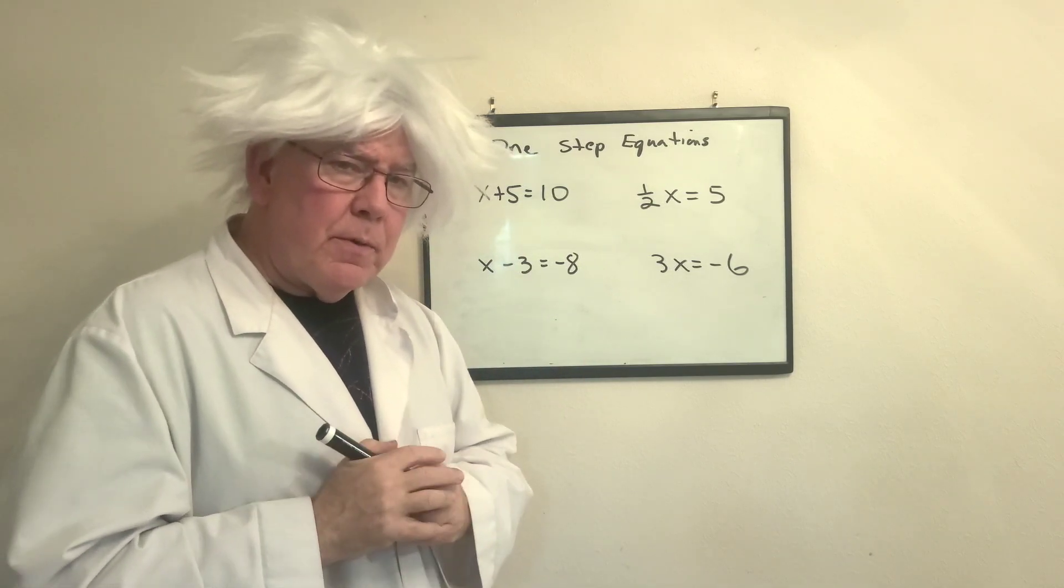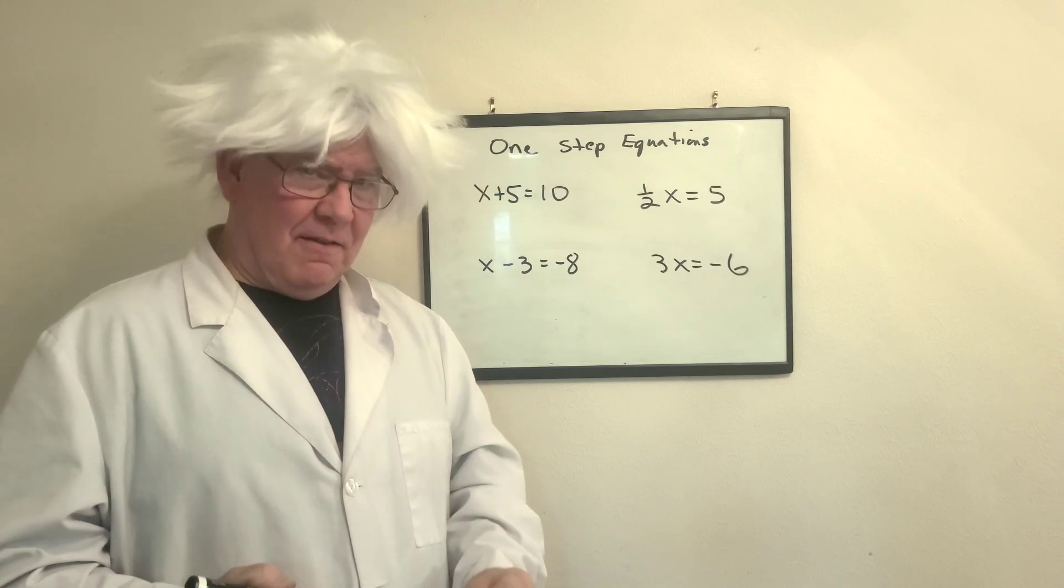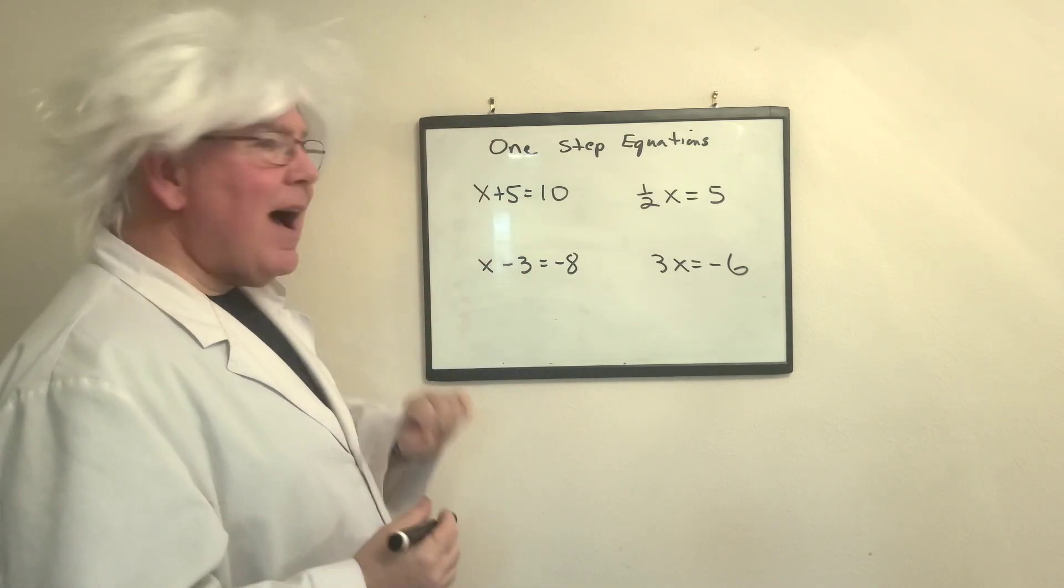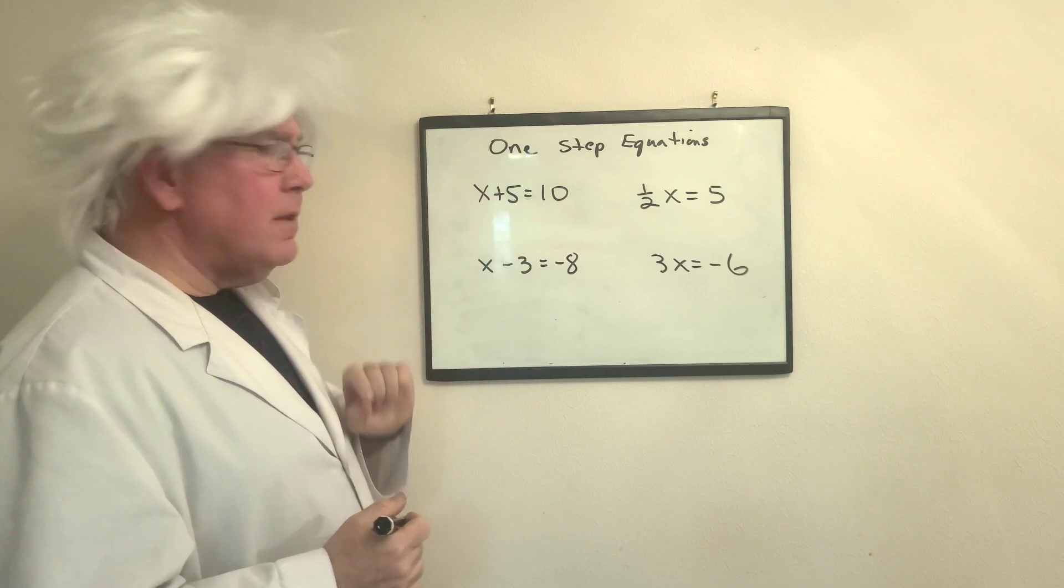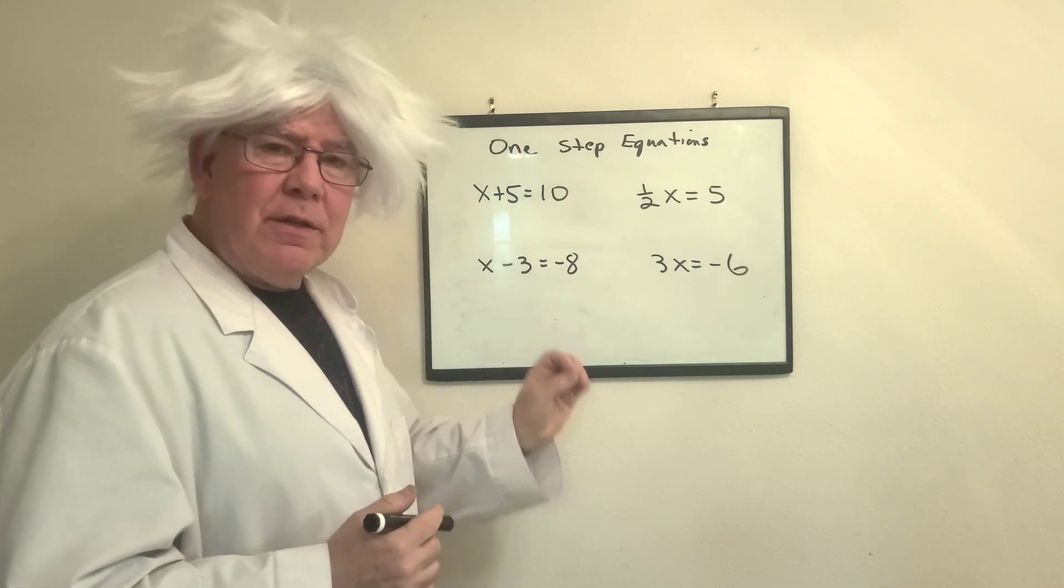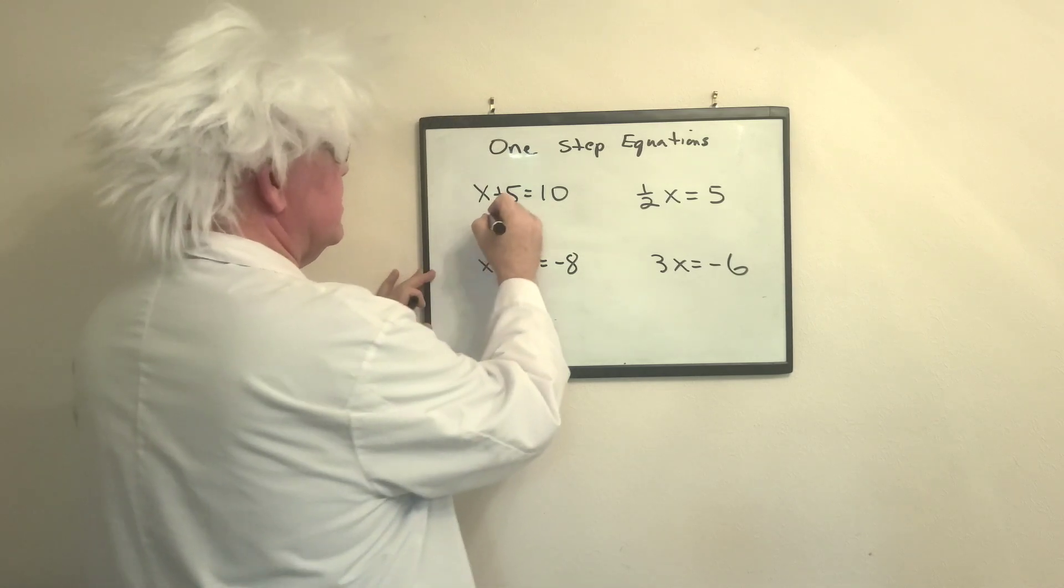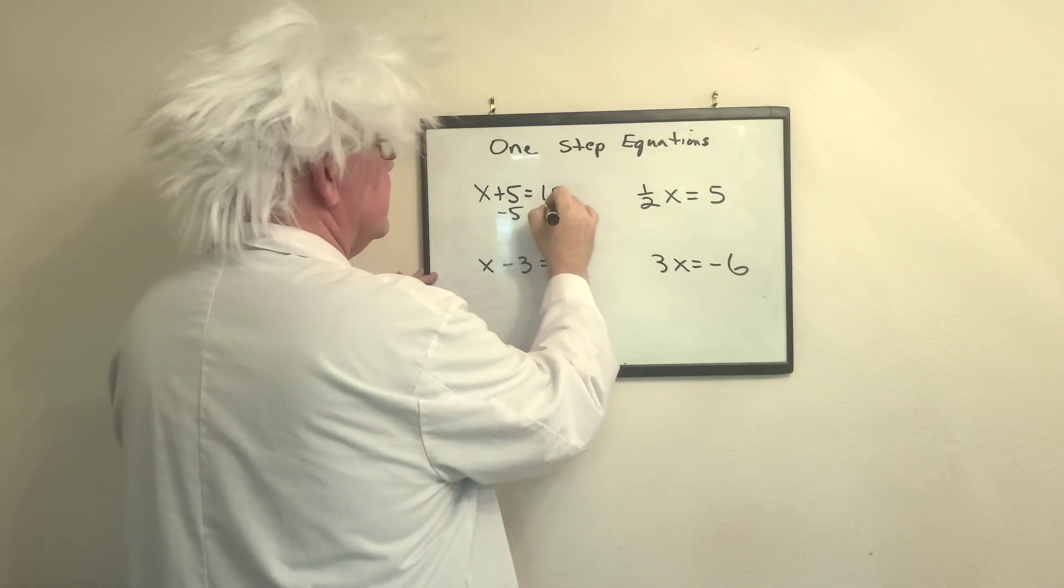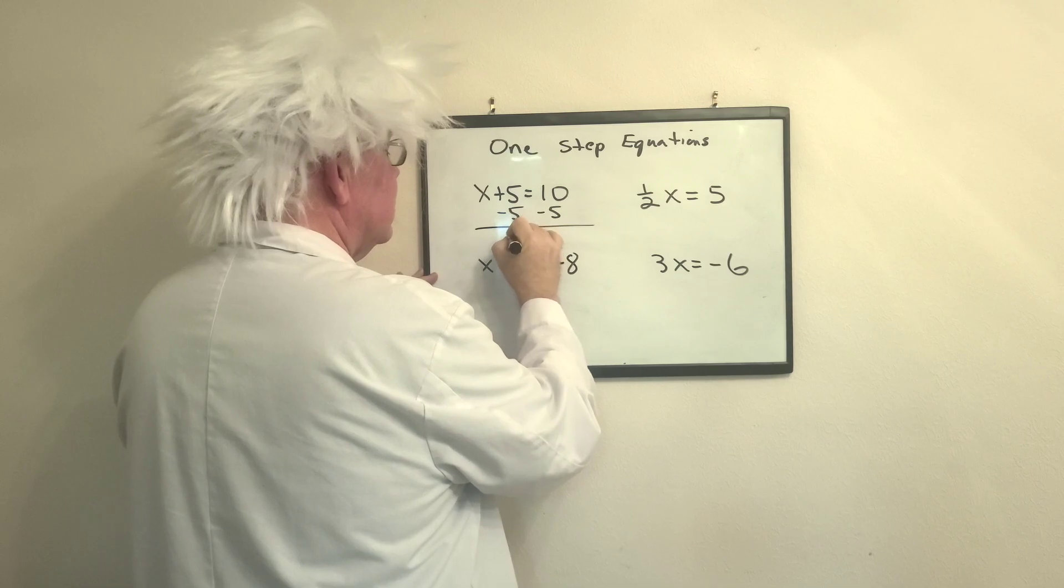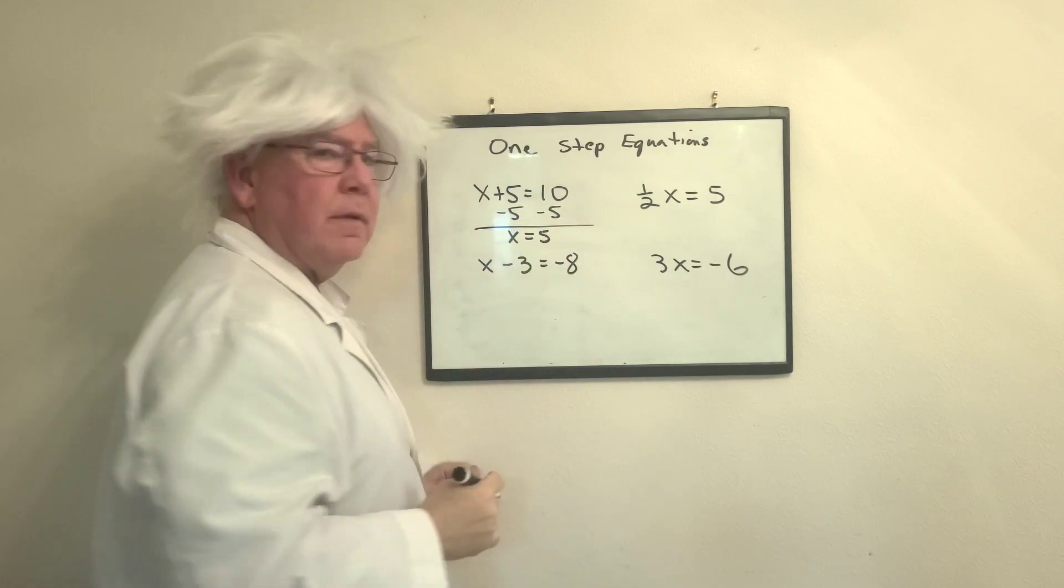The deal is we're going to get the variable by itself. We need to isolate the x. We're doing addition for our operation, so we're going to undo addition with subtraction. We will subtract 5 from both sides. So x equals 5.